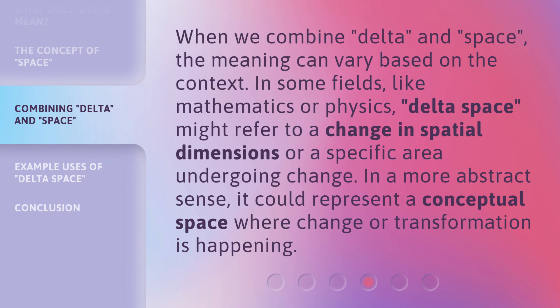When we combine Delta and space, the meaning can vary based on the context. In some fields, like mathematics or physics, Delta Space might refer to a change in spatial dimensions or a specific area undergoing change. In a more abstract sense, it could represent a conceptual space where change or transformation is happening.